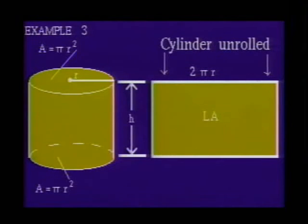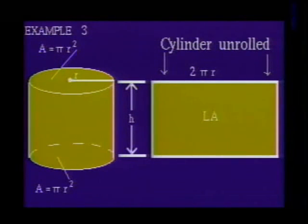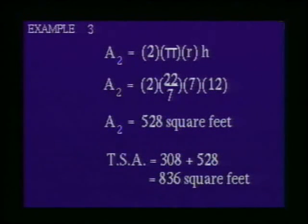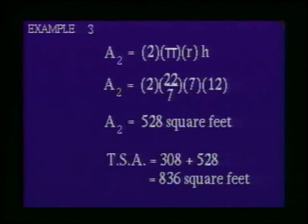Now we are ready to calculate the area of the lateral surface. Think of making a vertical cut up the side of the cylinder and then unrolling it. The lateral surface is a rectangle with length equal to the circumference of the circular base and width equal to the height of the cylinder. This gives us A₂ = 2πr × h. Using 22/7 for π and substituting 7 for r and 12 for the height, we get A₂ = 2 × 22/7 × 7 × 12 = 528 square feet. The total surface area of the cylinder is 308 + 528 = 836 square feet.